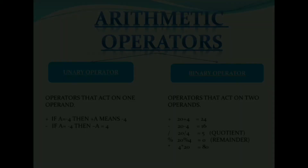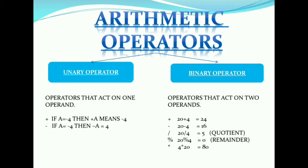Operators are constructs that can manipulate the values of operands. For example, in the expression 2 plus 3 equals 5, the 2 and 3 are operands and plus is the operator. There are four types of operators: arithmetic, relational, logical, and other operators. Arithmetic operators are of two types: unary and binary. Unary operators act on one operand, for example plus-plus a or minus-minus a.